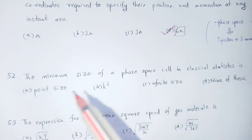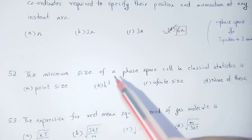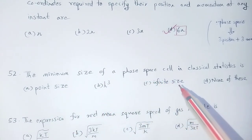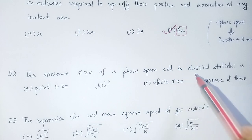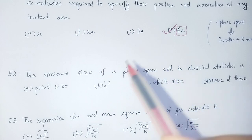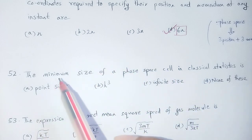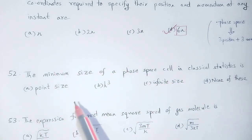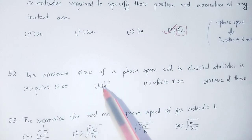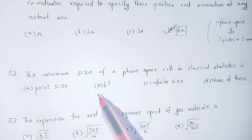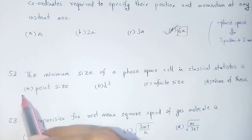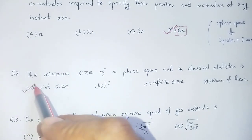Question number 52: The minimum size of a phase space cell in classical statistics. In quantum statistics, the minimum size is h^3. But in classical statistics, the minimum size is point size. Option number A: point size.